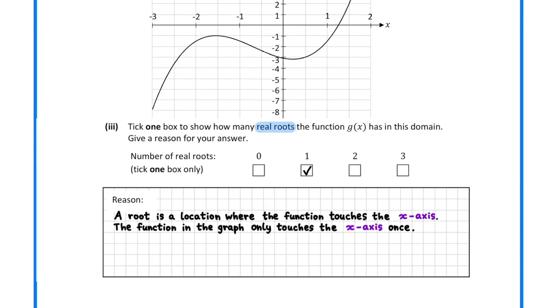In part 3, we must find the number of real roots in the given domain. A root is a location where the function touches the x-axis, and our graph only touches the x-axis once. So the answer is 1 root.